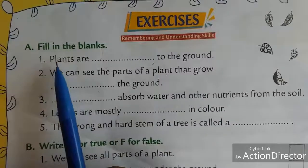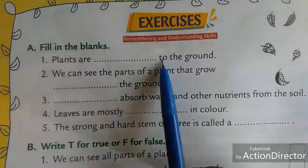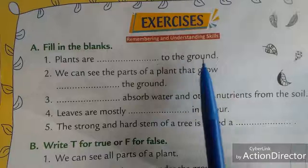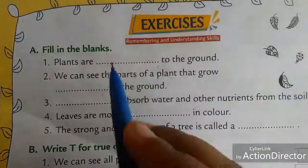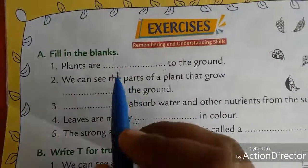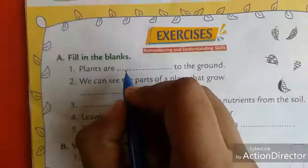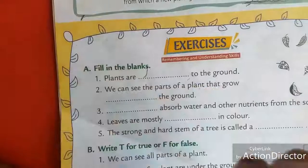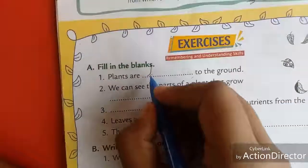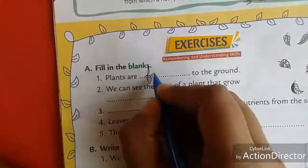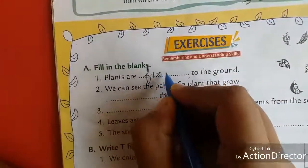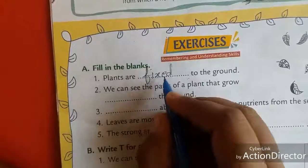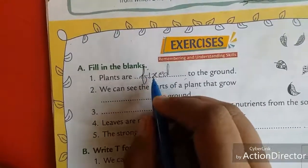First, plants are blank to the ground. Plants are fixed to the ground. So write here: fixed.